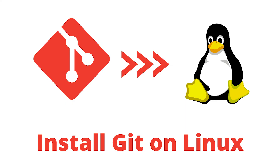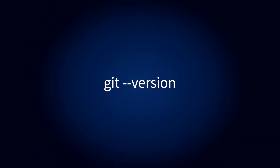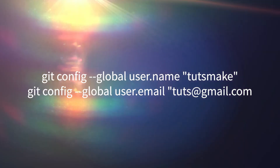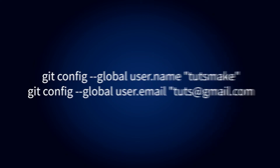To install Git on Linux, the easiest way is by using the Linux Ubuntu package manager. Use the following command to download Git from your shell, then verify the installation was successful by typing git version. If you want to specify user and password information to the Git repository, use the following command.